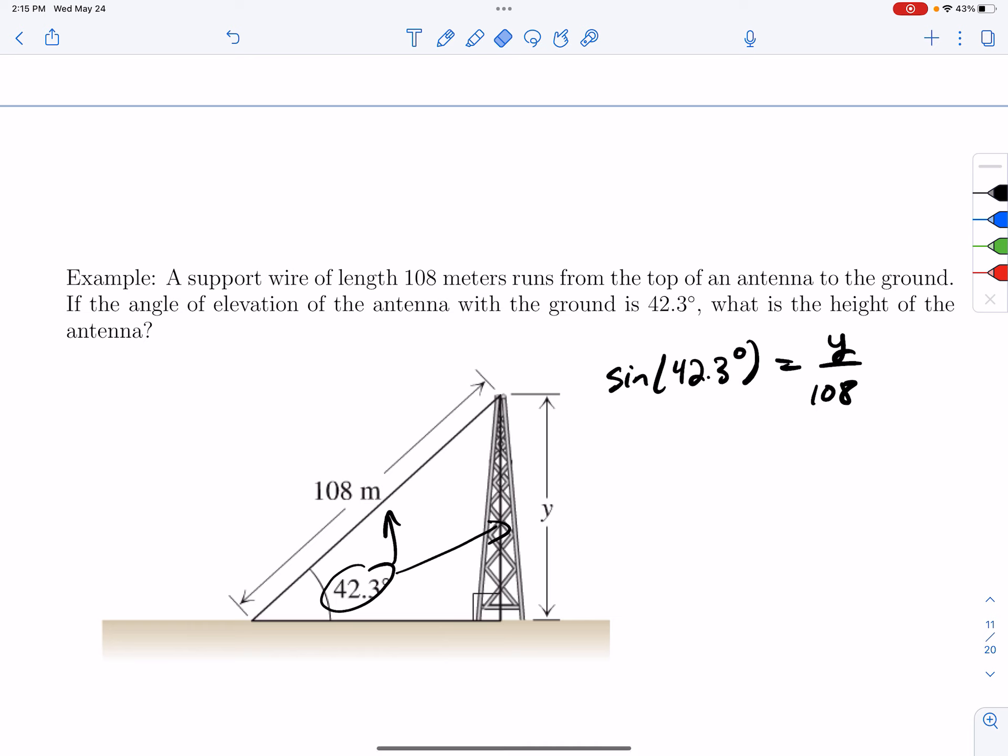So I'm going to say sine of 42.3 degrees is equal to the opposite over 108. Multiply both sides by 108. And then just type that in the calculator. So 108 times sine 42.3 degrees is 72.69, let's call it. Oh, and this is meters, not feet.